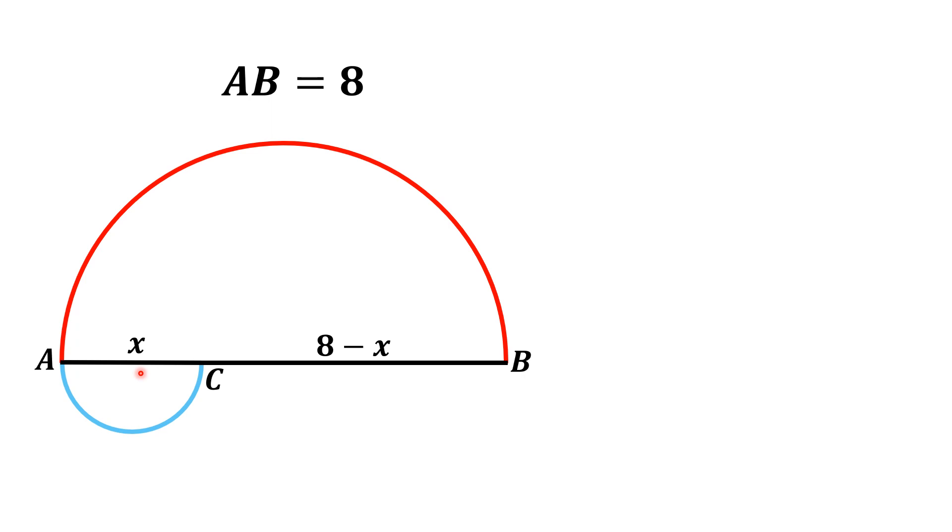Here, diameter is x and it is a semicircle. So, its length will be πx divided by 2.